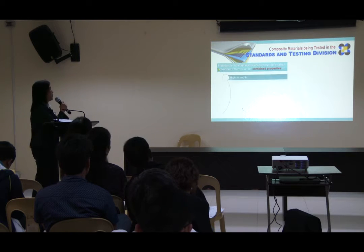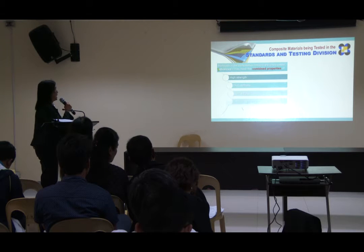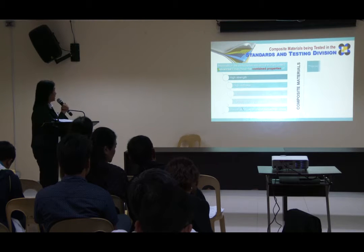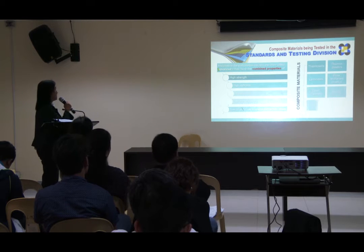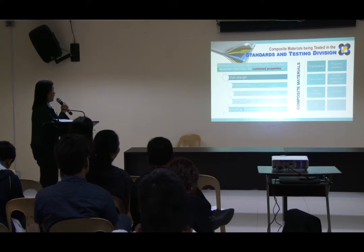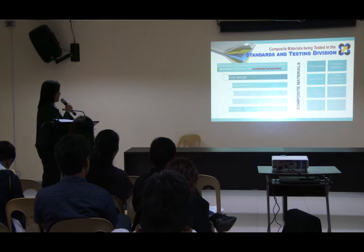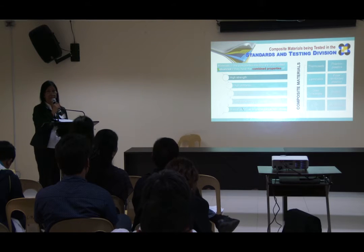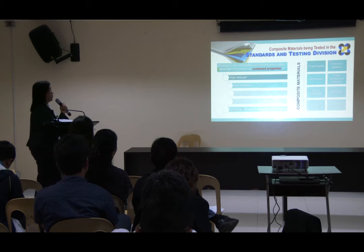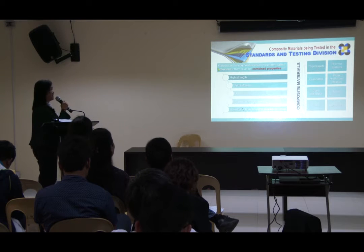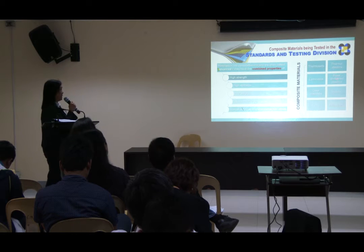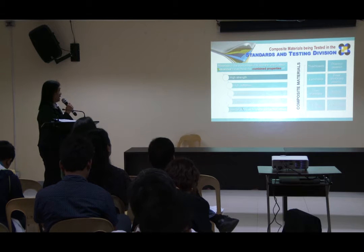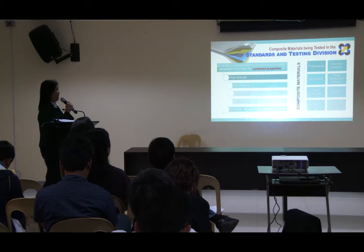Materials in the composite industry are often called advanced if they have the combined properties of high strength, high stiffness, low weight, corrosion resistance, and special electrical properties in some cases. Composite materials can be thermosets, thermoplastics, laminates, fiber-reinforced plastic, core materials, resins, films, or any other combination of these materials.